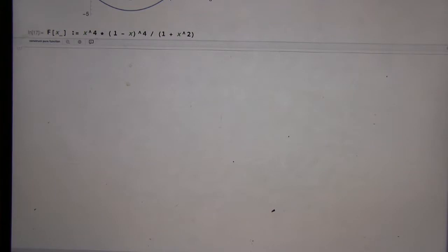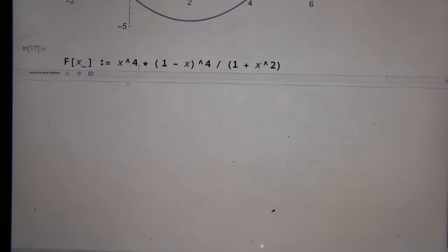So today, this is a little bigger. Today I'm going to go through a neat calculus exercise I learned from John Baez on Twitter. And it involves this function: f of x equals x to the fourth times 1 minus x to the fourth on the top, and the whole thing divided by 1 plus x squared.